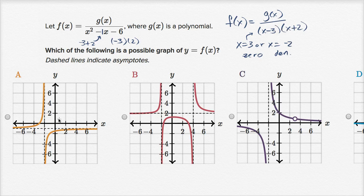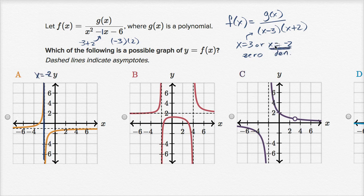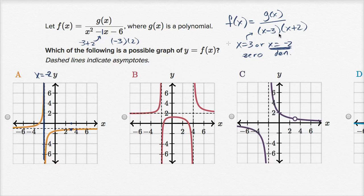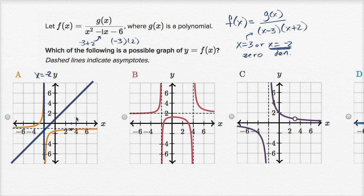In choice A, we have one vertical asymptote at x equals negative two, which seems consistent. But what about x equals three? This graph is defined at x equals three, right over there — and f of x is clearly not defined at x equals three, because when x equals three the denominator is zero, and dividing by zero is not defined. So we're going to rule out choice A, because we would need to see either a vertical asymptote or a removable discontinuity at x equals three.